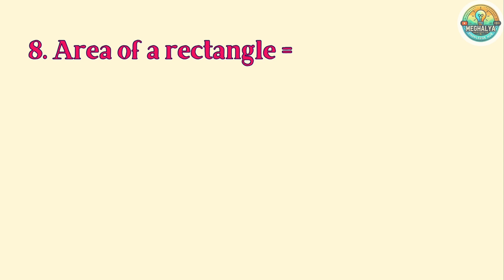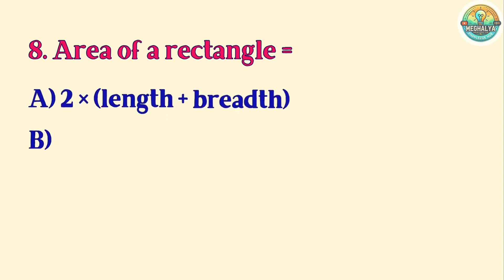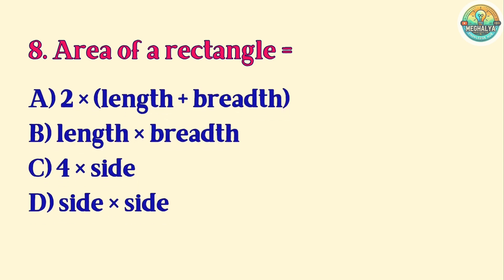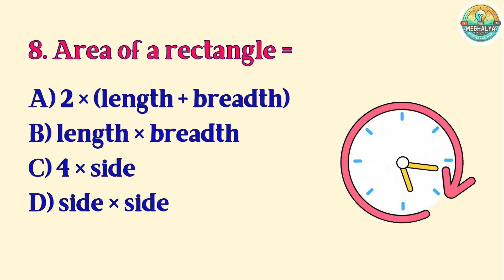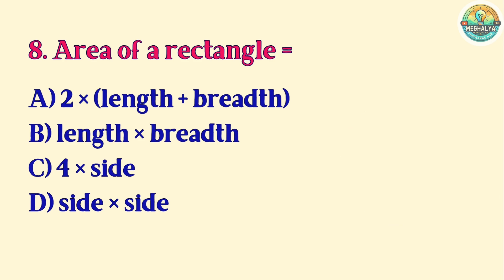Rectangle. Question 8. Area of a rectangle equals: A. 2 times the length plus breadth. B. Length times breadth. C. 4 times the side. D. Side times side. Correct answer is B. Length times breadth.